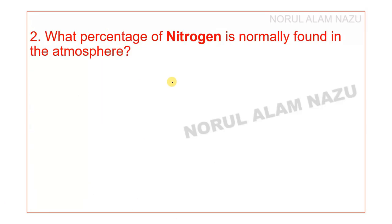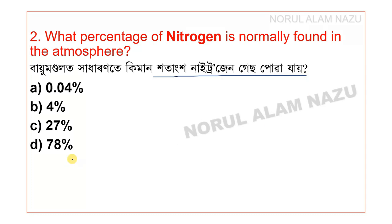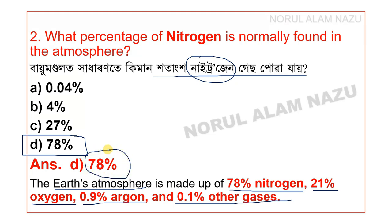What percentage of nitrogen is normally found in the atmosphere? The answer is approximately 78%. Nitrogen makes up 78% of the atmosphere, 21% is Oxygen, 0.9% is Argon, and 0.1% are other gases. So the atmosphere's most abundant gas is called Nitrogen.